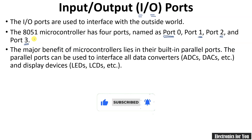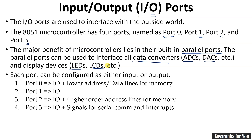The major benefit of ports lies in the built-in parallel ports. All these ports are actually parallel ports and they are used to connect data converters such as ADC and DAC, or displays such as LEDs or LCDs. Each port can work as an input or output port — port 0, port 1, port 2, and port 3 all work as I/O ports. But apart from this, each port has some additional function.